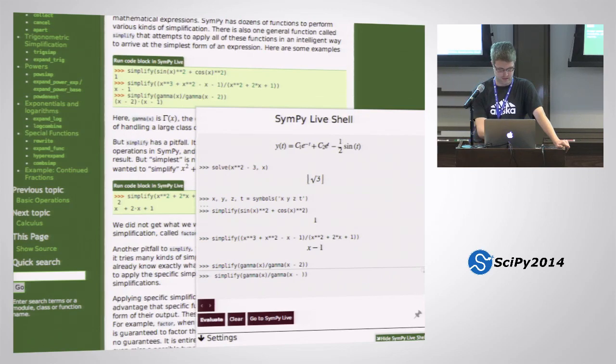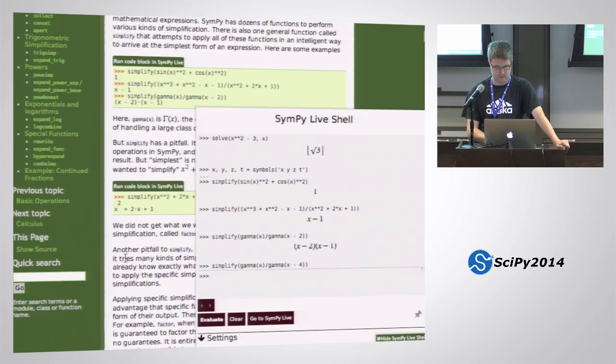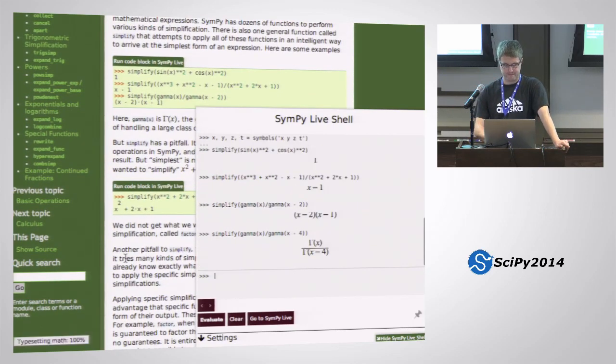And then you can arrow up and go in and edit one of the examples and play around with it. So here, if I make this a 4 instead of a 2, you can see what that comes up with. So it doesn't come up with anything.